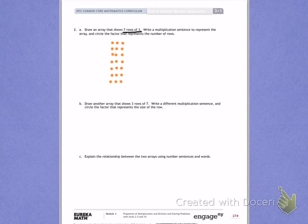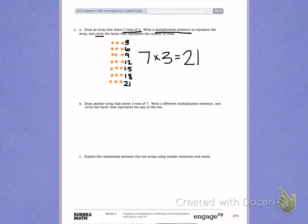When I look at this, I see I have 7 rows of 3. My multiplication sentence: I have 3, 6, 9, 12, 15, 18, 21. 7 times 3 equals 21. I need to circle the number of rows. I have 7 rows, so I'll circle the 7.